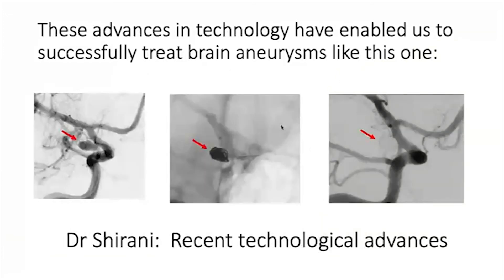These advances in technology have enabled us to successfully treat brain aneurysms — similar to pictures shown earlier, where the aneurysm is treated with coils, the aneurysm neck is no longer visible, and over time the aneurysm is completely blocked off and prevented from rupturing again. At this time, I'll turn the reins over to Dr. Shirani, who will tell us about recent technological advances in aneurysm therapy. Thank you very much.